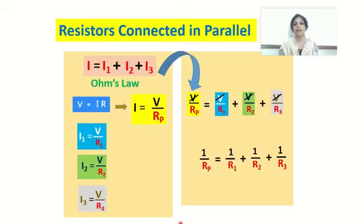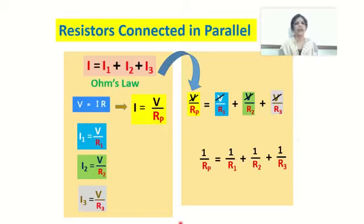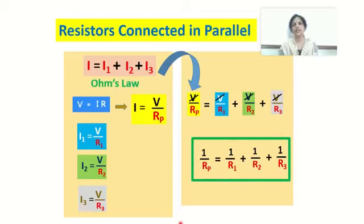For three resistors connected in parallel, the equation is 1/Rp = 1/R1 + 1/R2 + 1/R3. If you take more than three resistors, then the formula will change accordingly. This is one of the important relations for resistors connected in parallel.